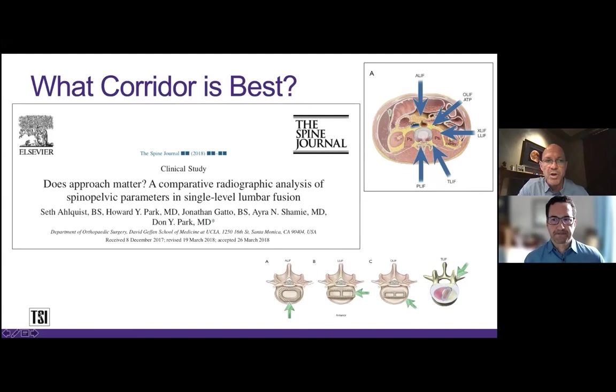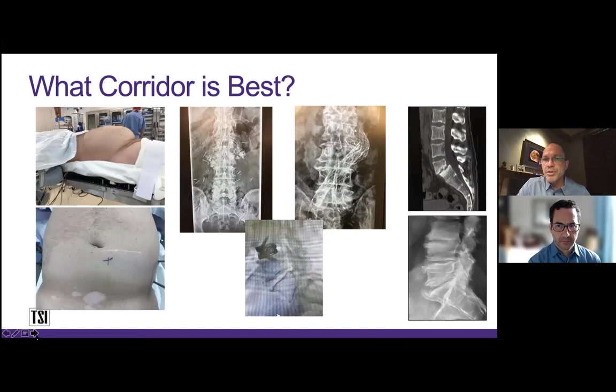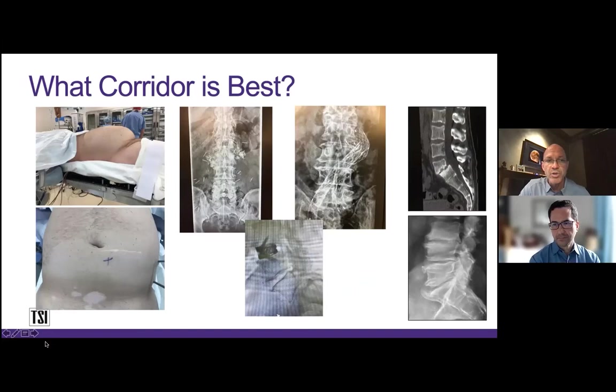The corridors I'm going to focus on are anterior, oblique, and direct lateral. What corridors are best suited for anterior, lateral, or oblique? There are a lot of factors — obesity, previous abdominal surgery in the lower quadrants, previous retroperitoneal surgery, previous aortic aneurysm, previous spine surgeries, osteophytes, and transitional anatomy. These are all issues that cross your mind when deciding the safest approach, and teamwork with the spine surgeon is where you decide the best approach.